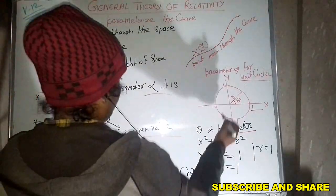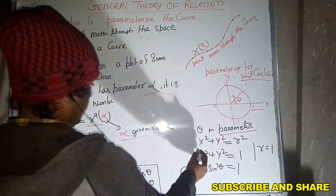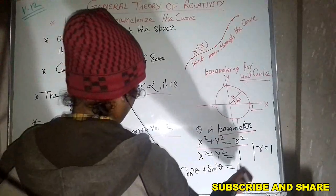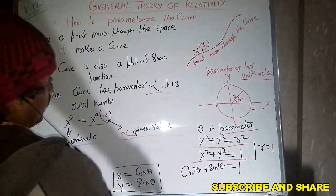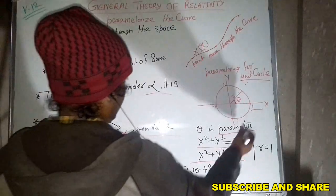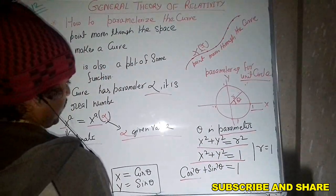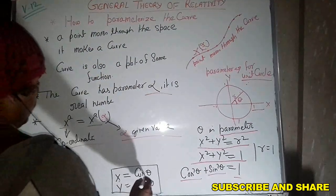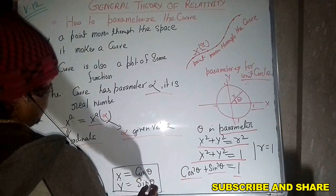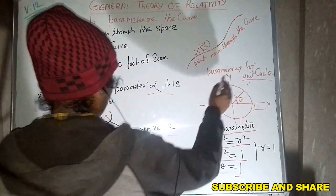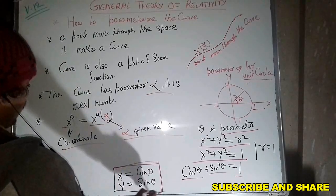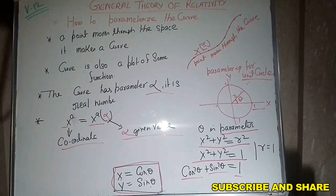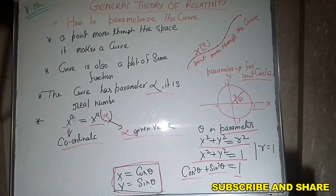We know that the equation of any circle is x² + y² = r², and r is given as 1. So it means x² + y² = 1. We also know that cos² theta + sin² theta = 1. So x is equal to cos theta and y is sin theta — these are the components along x and y. And this is called the parameterization of the unit circle.